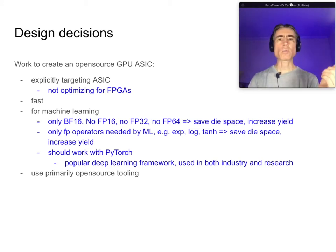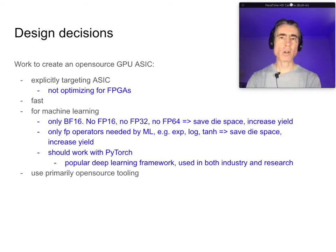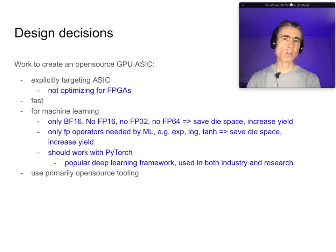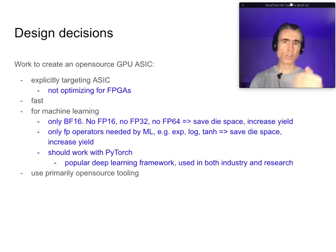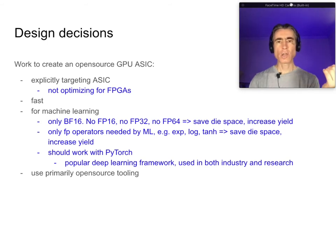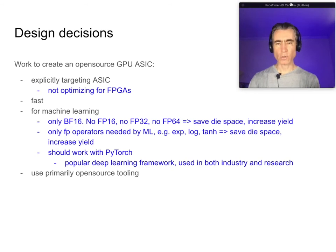I wanted to work with PyTorch. There are a number of deep learning frameworks — TensorFlow, PyTorch, and others. I'm choosing PyTorch. I've used it a lot, I'm very familiar with it, and it's used extensively in both industry and research. That doesn't mean we couldn't also get VariGPU working on TensorFlow — I'm just only targeting PyTorch. And we want to use primarily open source tooling.